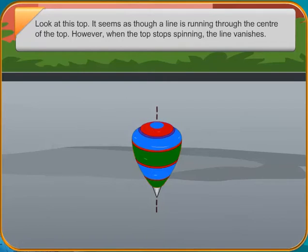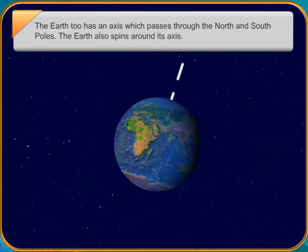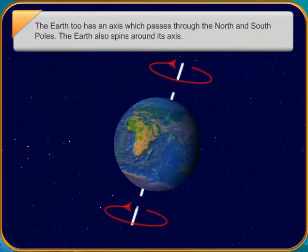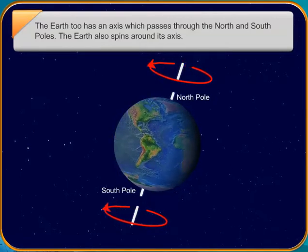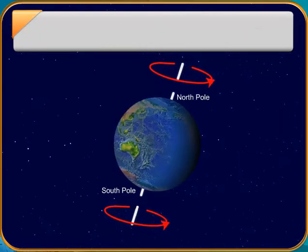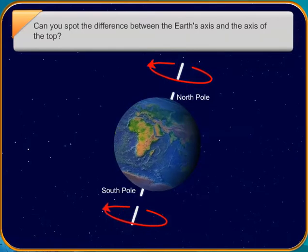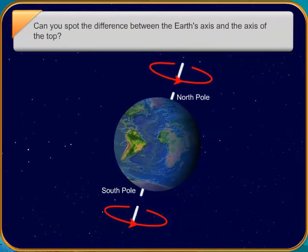The Earth too has an axis which passes through the north and south poles. The Earth also spins around its axis. Can you spot the difference between the Earth's axis and the axis of the top? The axis of the top is vertical, but the axis of the Earth is slightly tilted. It is at an angle of 23.5 degrees.